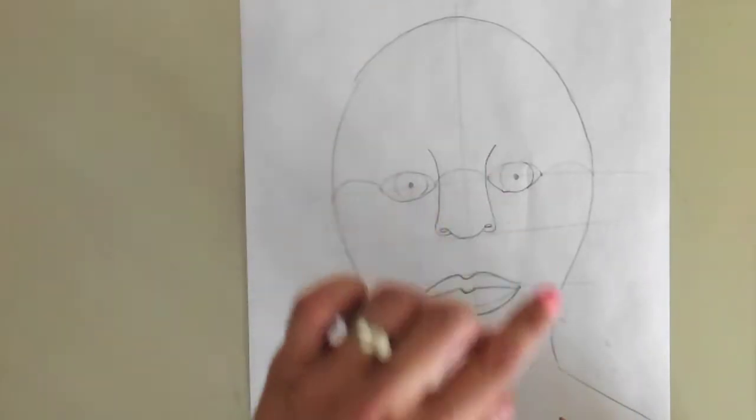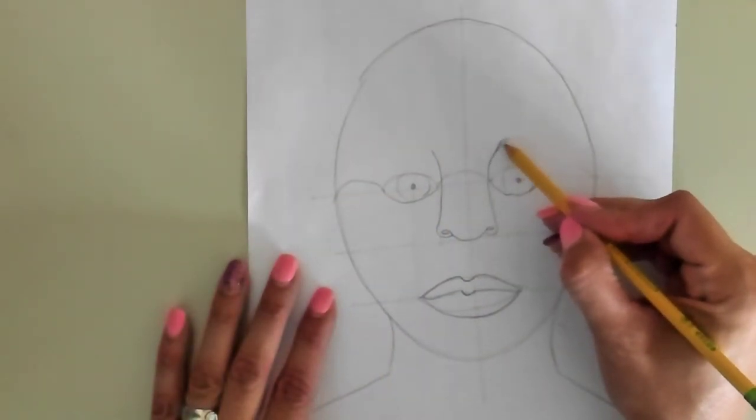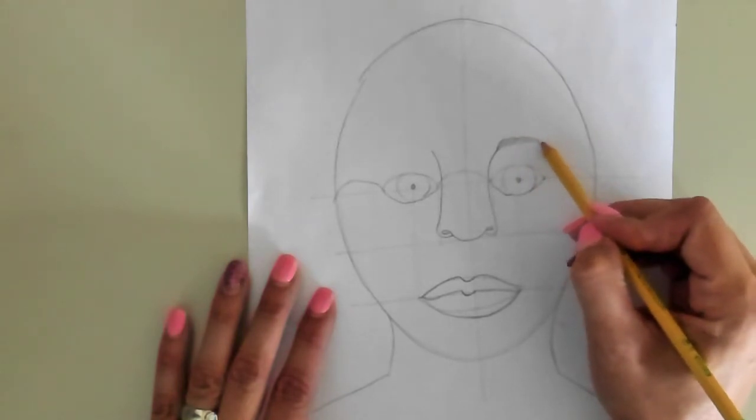Now, above our eyes, we have eyebrows, and eyebrows are many different hairs that overlap and curve towards our ears.